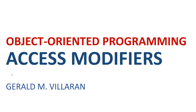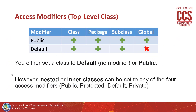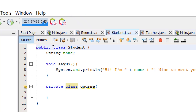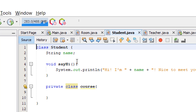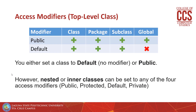In the previous video we talked about class visibility. Visibility of attributes and methods can also be modified using different keywords. These keywords are called access modifiers. For top-level classes there are only two access modifiers — either you set it as public, or you don't indicate any modifier, which will set the visibility to default.